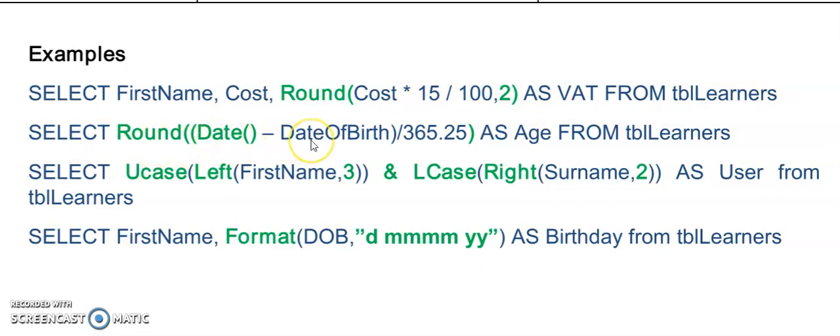I'm taking today's date, deducting from that the date of birth that would be stored as a date/time data type. That would give me the number of days that they are old, so therefore I need to divide by 365.25 and I'm rounding it off to get an integer value.